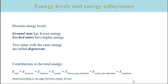In the equation, the energy contributions are listed according to the separation between energy levels for the different subsystems. This means that there are large gaps between the electronic levels. The gaps are smaller between the vibrational levels and decrease for each of the following contributions. They are smallest for the translational levels, which can approximately be regarded as being continuous.